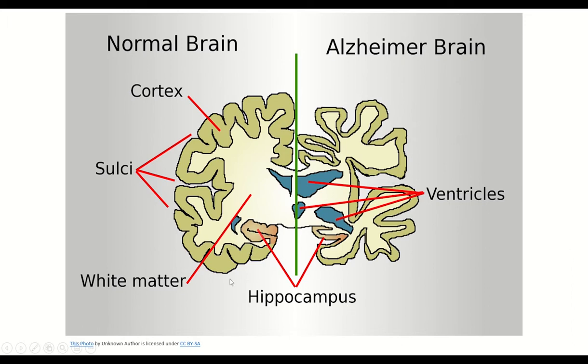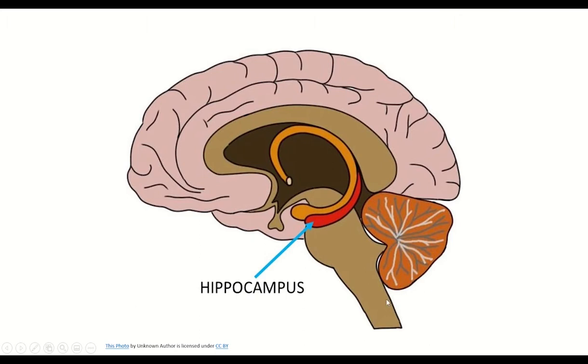What's our current understanding of the development of Alzheimer's disease? There are two key hallmarks that characterize the presence of Alzheimer's disease. First is the degeneration of a brain region referred to as the hippocampus.